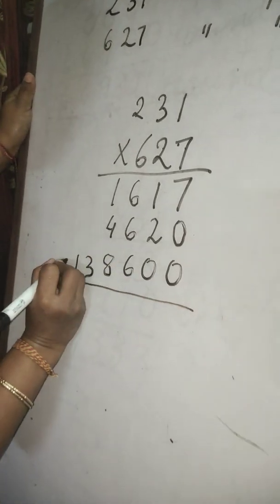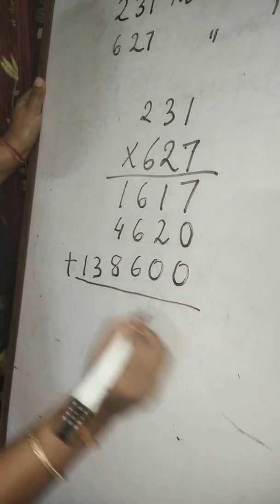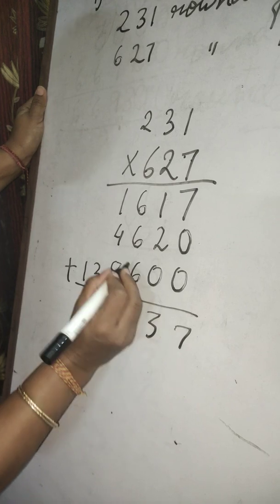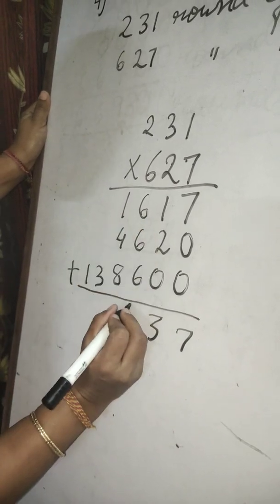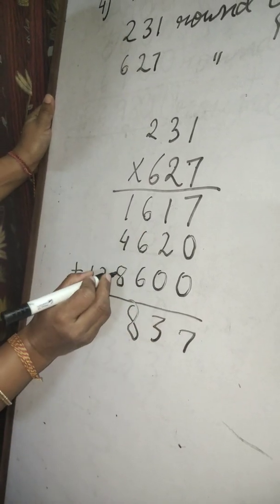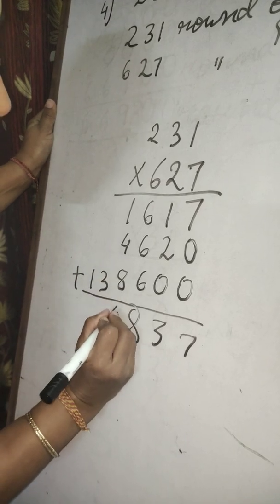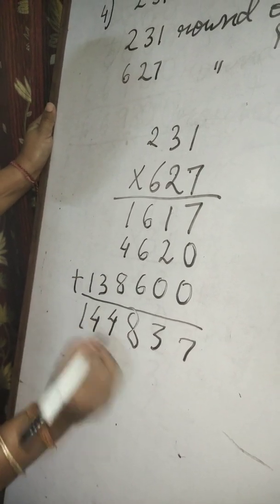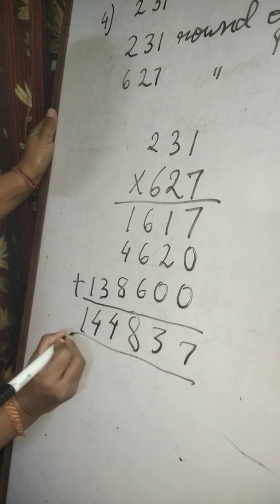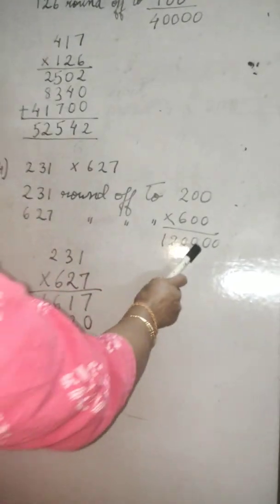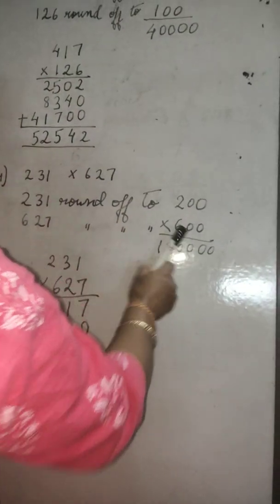Now add it. 7, 3. 6 plus 3 is 9. 18, carry 1. 9, 10, 14, carry 1. 4, 1. So this is the exact product and this is the estimated product.